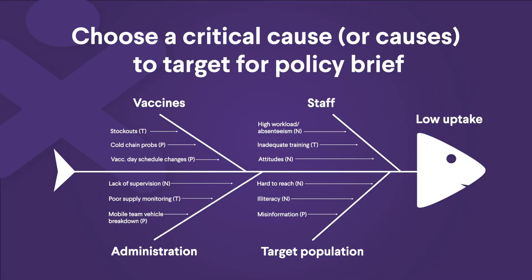Returning to our fishbone, imagine that when you're working with your team, you determine that improving supply monitoring is the highest impact, most modifiable root cause that you want to target in your policy brief. You might reason that stockouts are linked to monitoring of vaccine supply at the central medical stores, and that if these supply problems can be fixed, stockouts would be less likely. Fixing supply monitoring and supply chain issues, then, is our critical cause and the target of our policy brief.